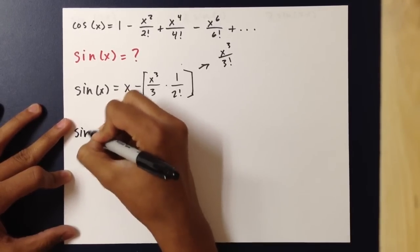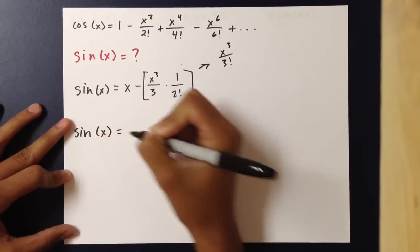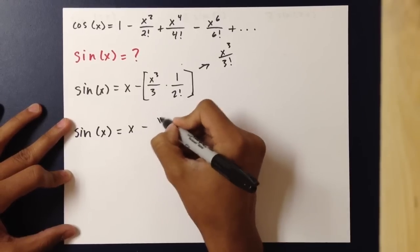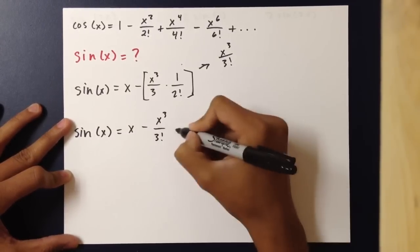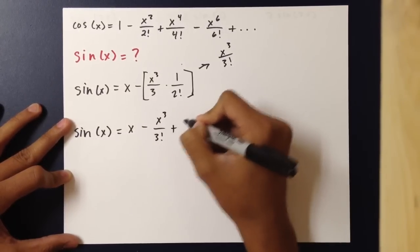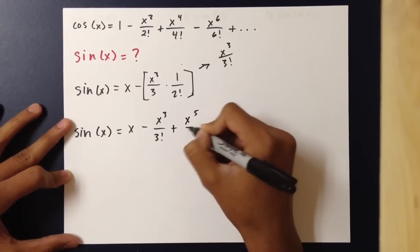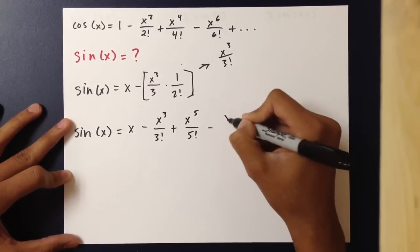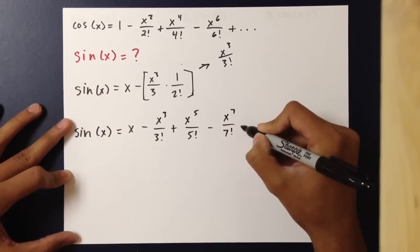So sine of x is x minus x cubed over 3 factorial, plus x to the fifth over 5 factorial, minus x to the seventh over 7 factorial, and so on.